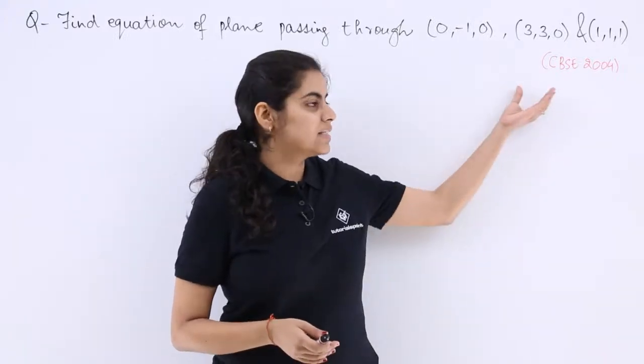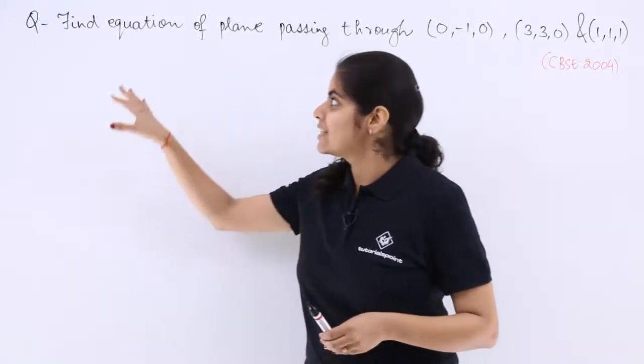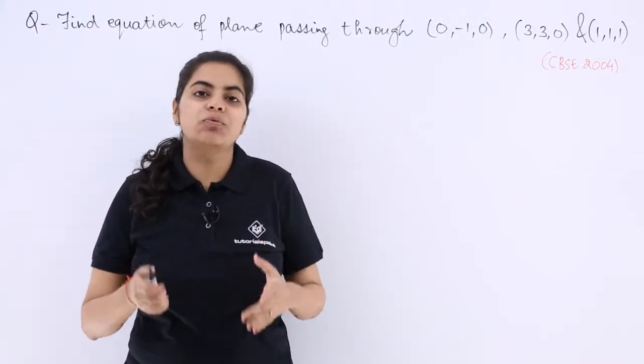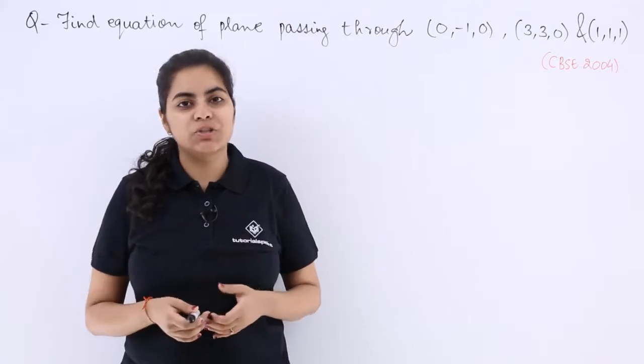So this is a question asked in the CBSE examination 2004. It says find the equation of a plane passing through these three points. Now these are the three points through which we have to find the equation of plane.